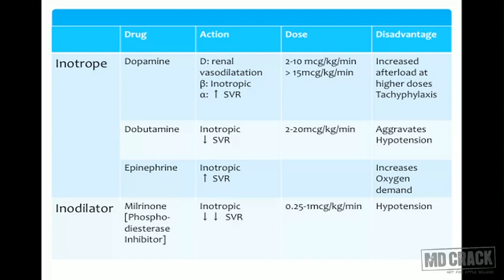Epinephrine is not preferred in congestive cardiac failure unless there is cardiogenic shock, because it increases systemic vascular resistance substantially and increases myocardial oxygen demand. Milrinone is a phosphodiesterase inhibitor, also called an inodilator, as it increases the inotropic effect and causes significant reduction in systemic vascular resistance. Hypotension is its side effect and it is always used as a second-line drug in combination with either dobutamine or dopamine.